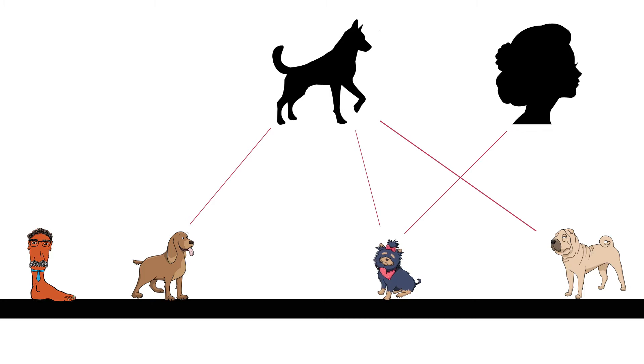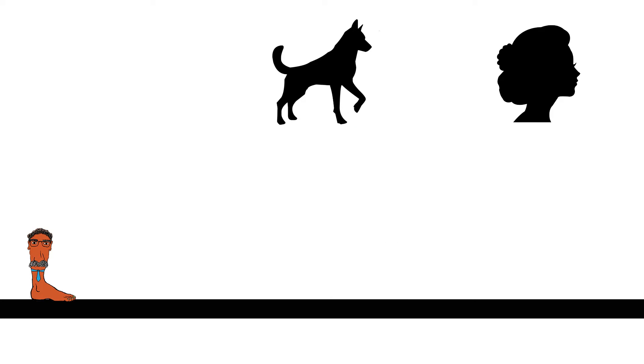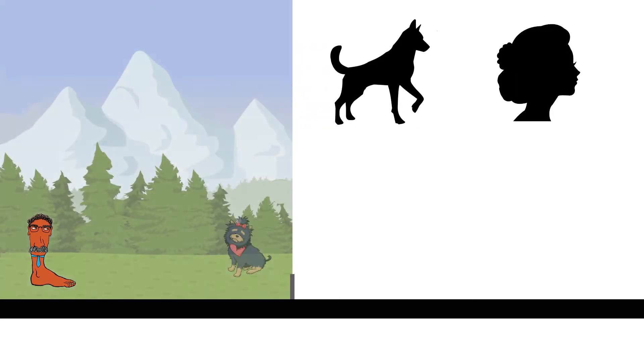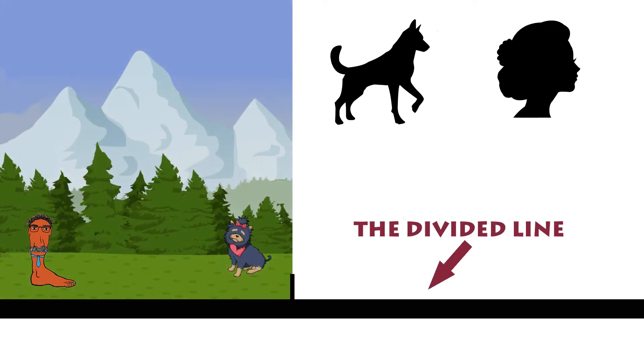Therefore, as discussed in the previous lecture, Plato divides existence into two worlds, the world of forms and the world of sensible things. He presents this division in his allegory of the divided line.